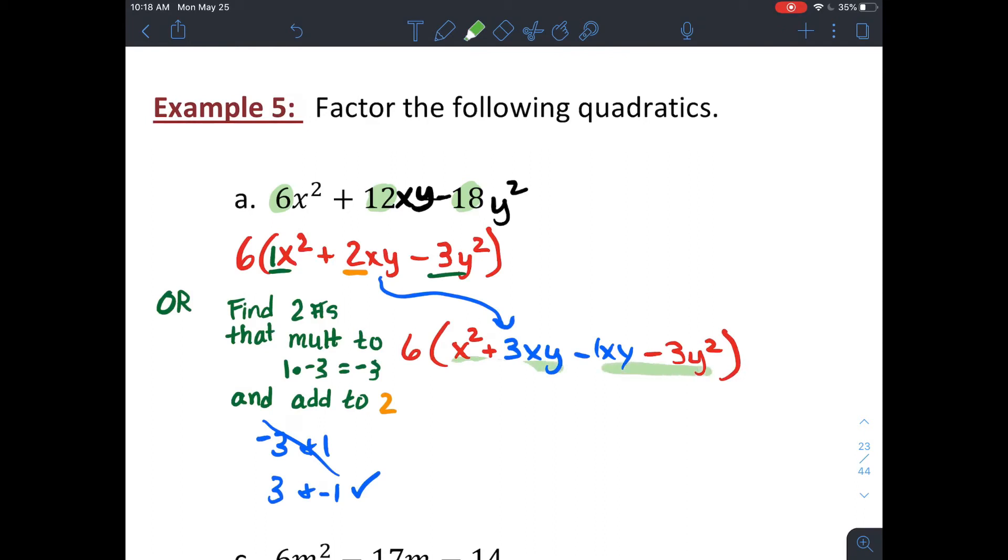So if I look at my first two terms and my last two terms and factor out my common factor, I can factor an x out of my x squared plus 3xy, which would leave me with x plus 3y. And then to make my factors match, I can factor a negative y out of my second two terms, which will leave me with another x plus 3y, which is what I wanted.